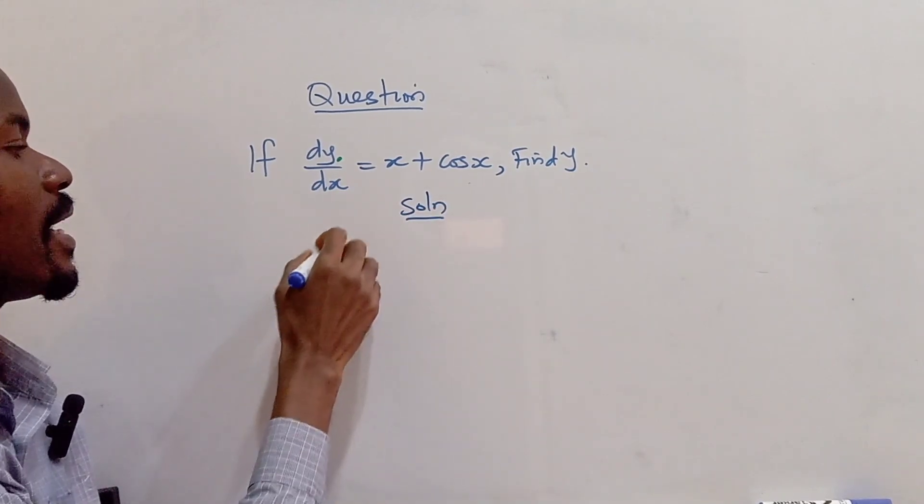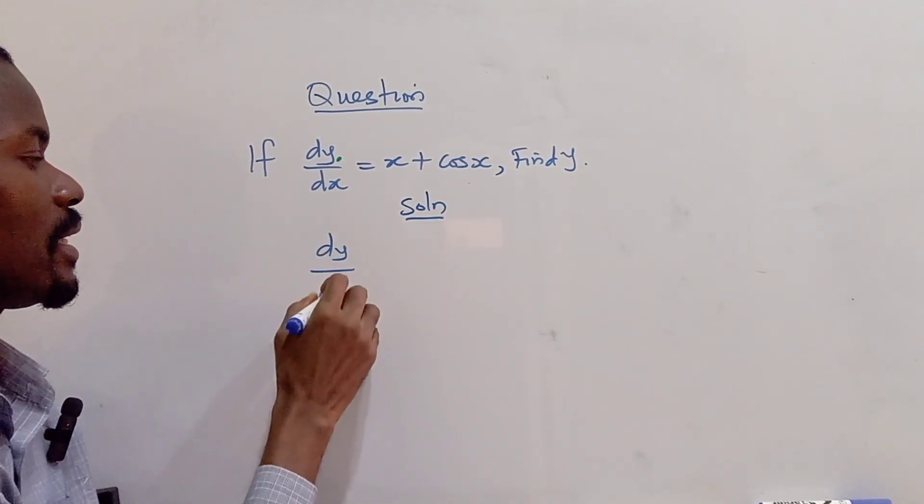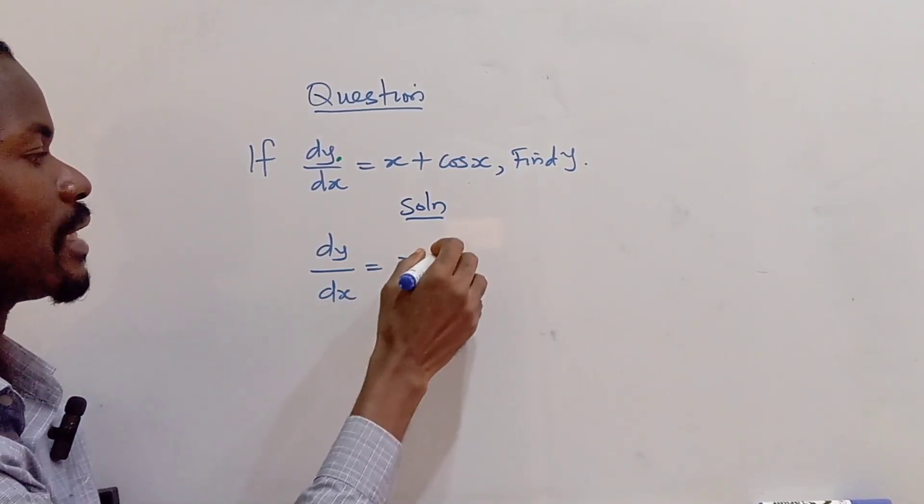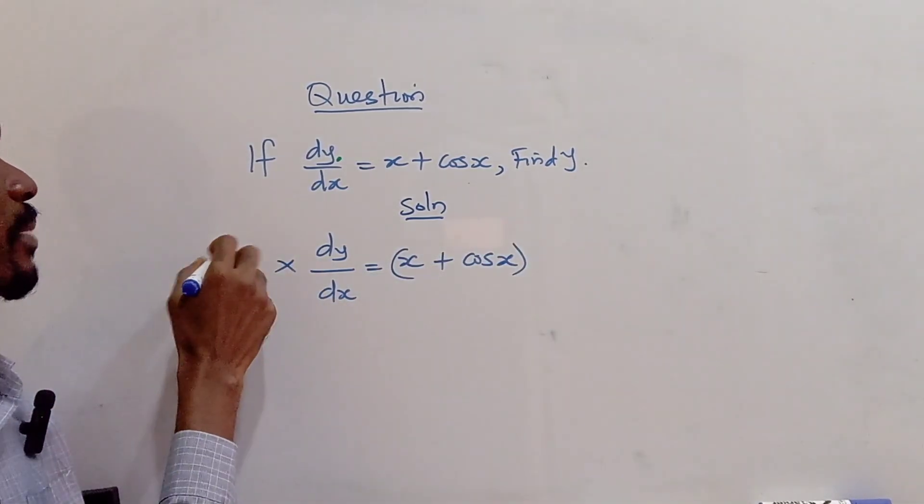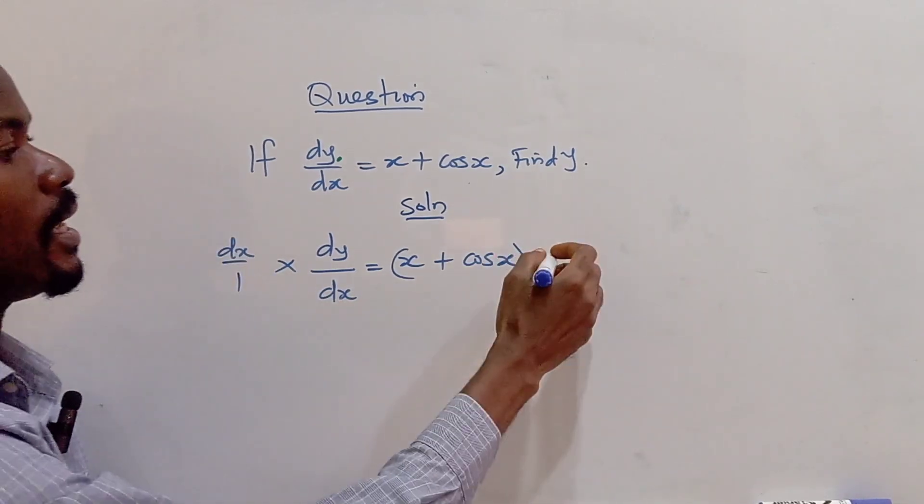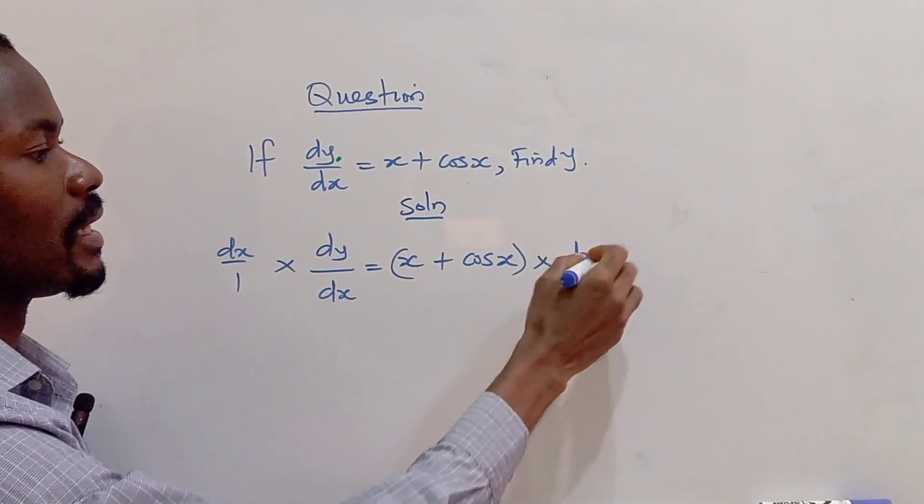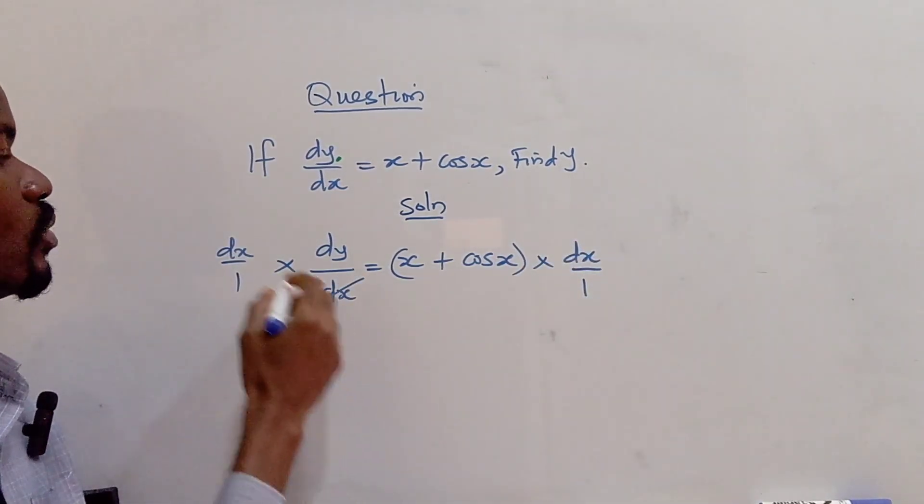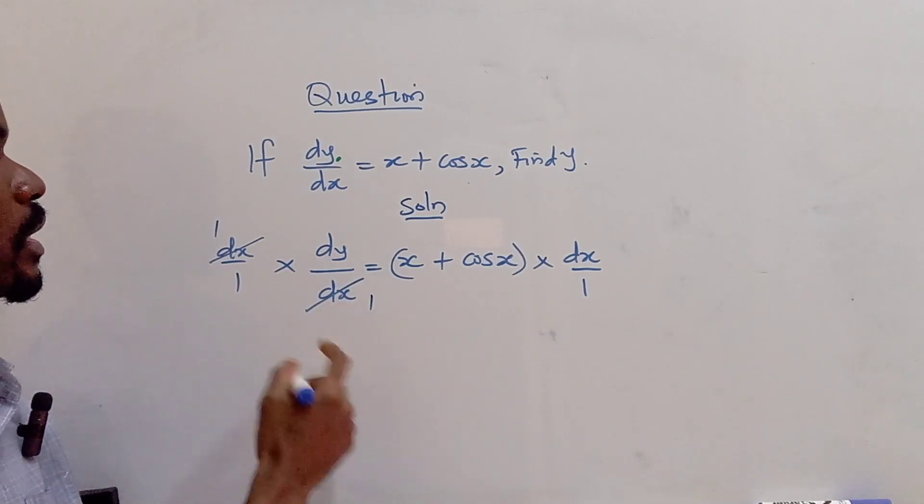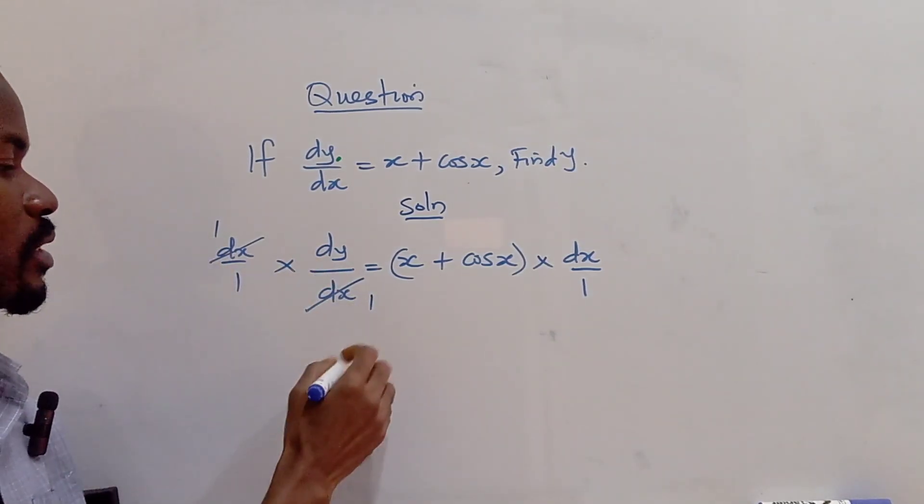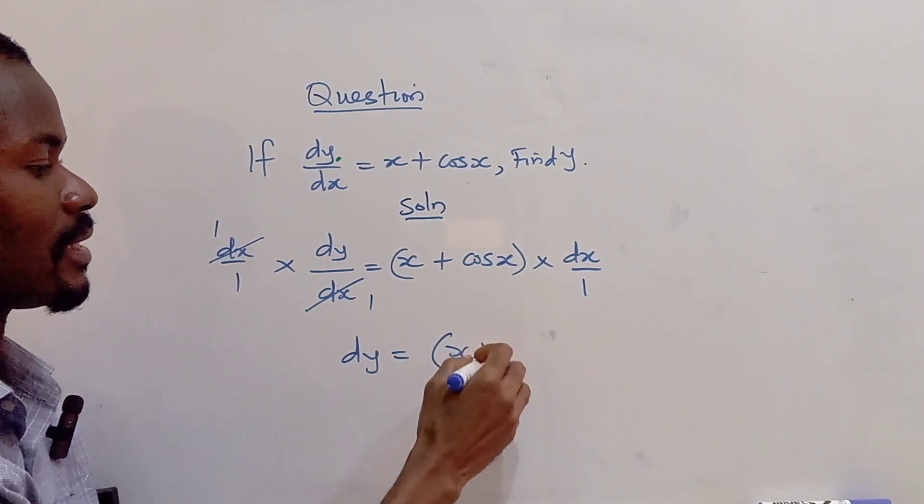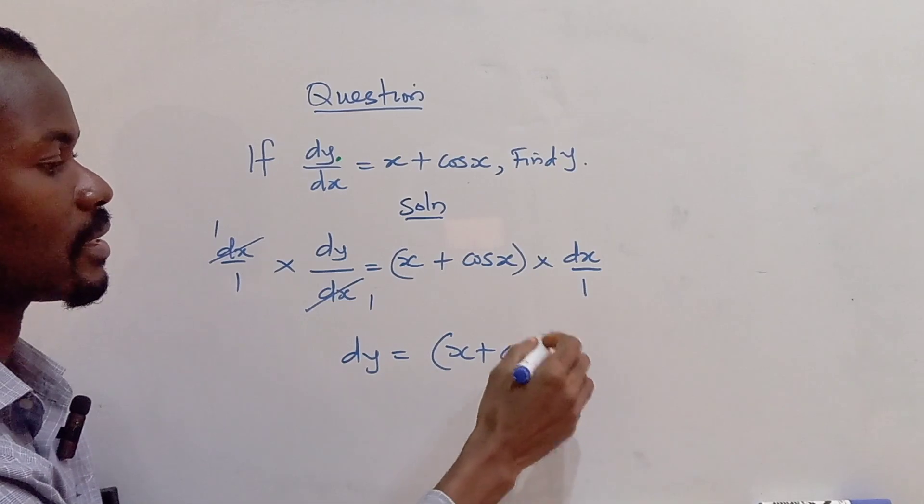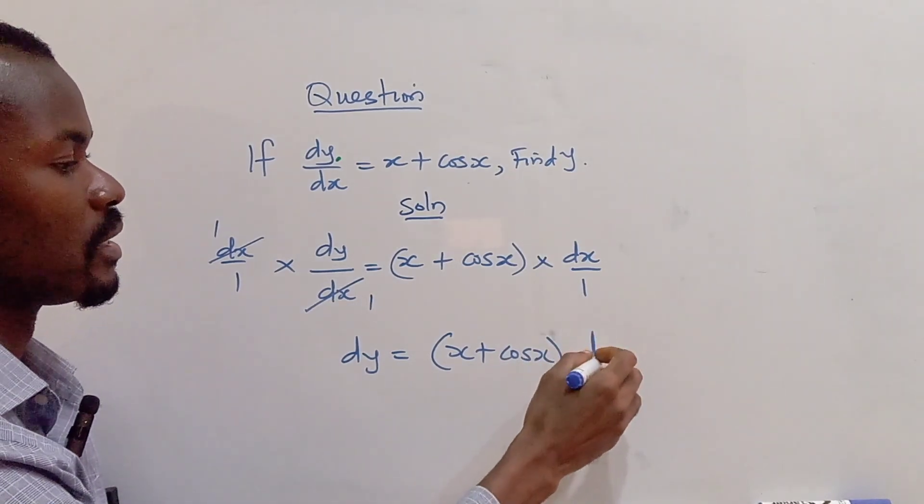Our solution, I have dy/dx equal to x plus cos x. Now I'm going to multiply this by dx over 1. So we can write this as 1. So we have dy. I have on the right hand side x plus cos x, multiply by dx.